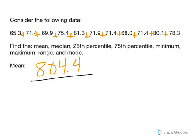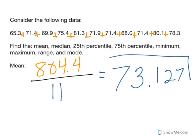Okay, they add up to 804.4, but there are 11 of them. So I'm going to divide by the 11 data points, and I will end up with 73.127.